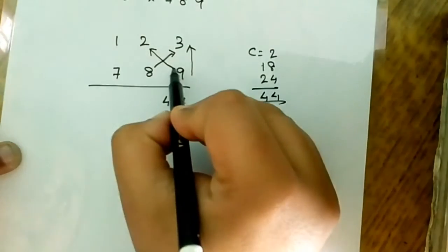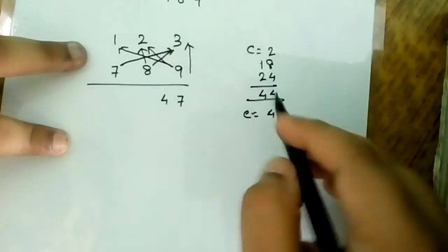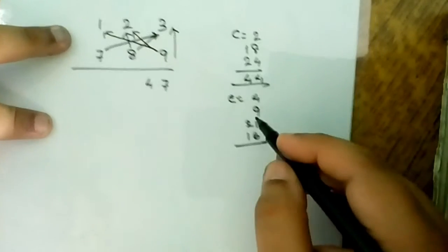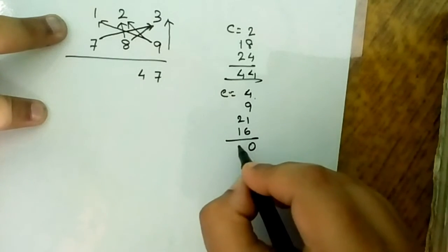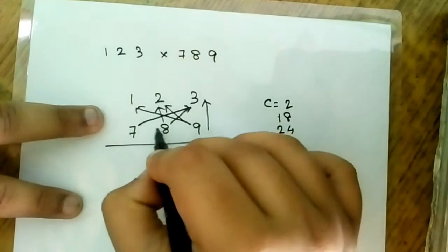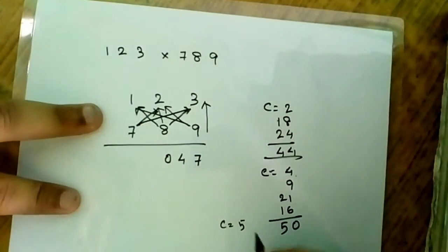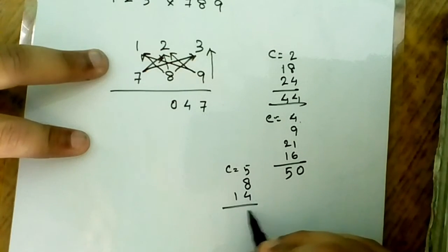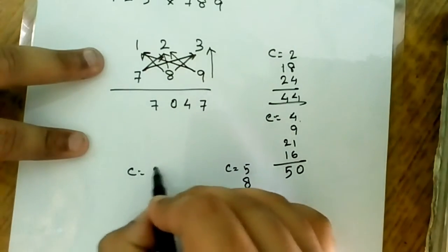In this process you have to do 9 into 1, 7 into 3, and 8 into 2. 9 into 1 is 9, 7 into 3 is 21, 8 into 2 is 16. Let's add up these numbers: 9 plus 21 plus 16 plus 4 equals 50. I will write 0 and carry is 5. In the next case, 8 into 1 is 8 and 7 into 2 is 14. 8 plus 14 plus 5 equals 27. I will write 7 and carry is 2.